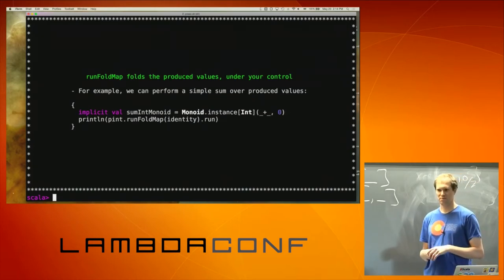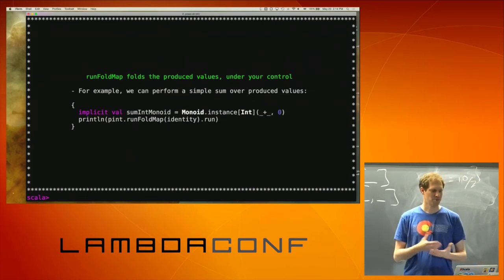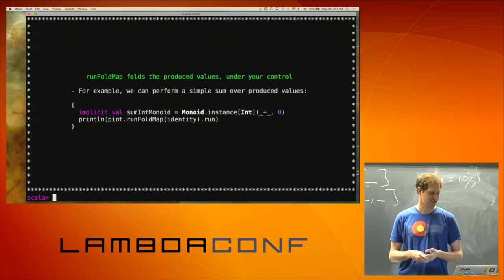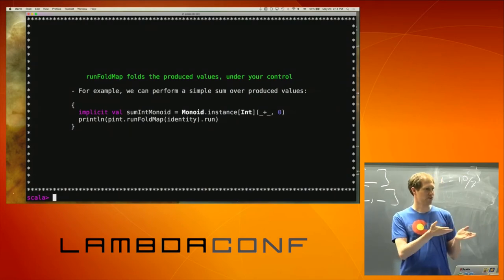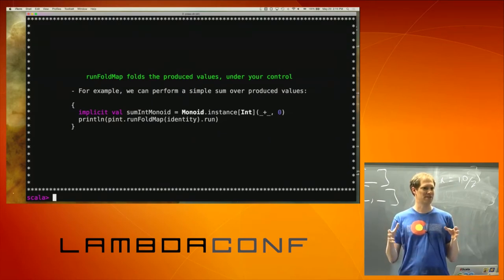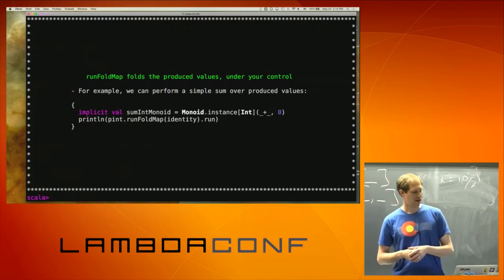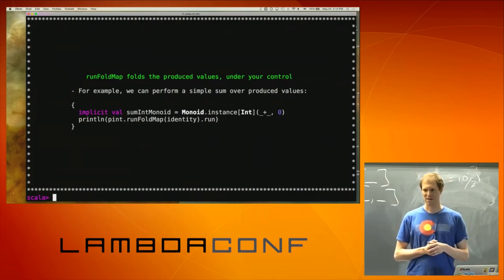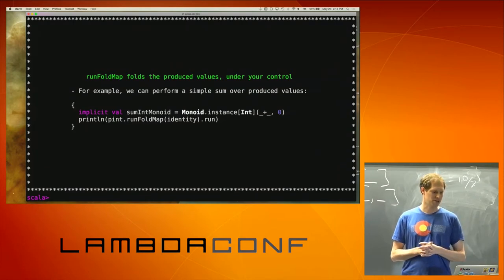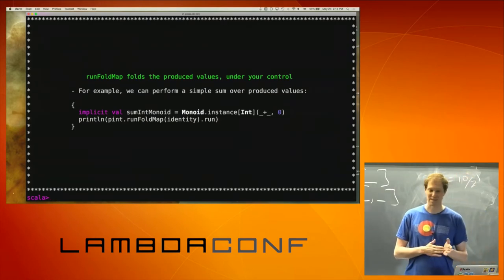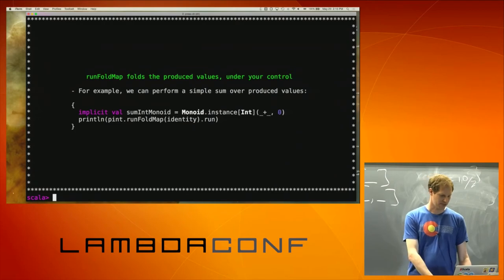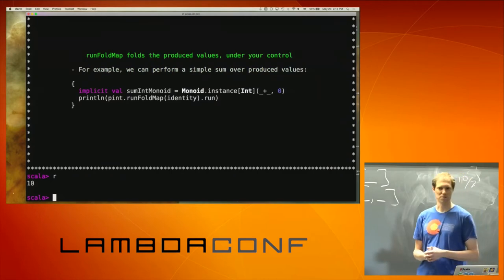runFoldMap is kind of like the last run method on processes, and it's an interesting one. It's kind of like foldMap in ScalaZ — you're taking a mapping function and folding over the results. It's map-reduce. For example, I've got my process of integers and I just want to sum all of them up. I instantiate a monoid that says I'm going to add all things together with identity zero. When I do runFoldMap with identity as my mapping function, I get back the sum: 1+2+3+4 = 10.